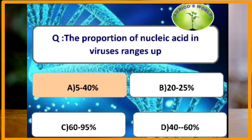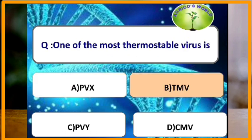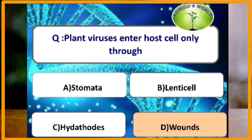The proportion of nucleic acid in viruses ranges from 5 to 40 percent. One of the most thermostable viruses is TMV — tobacco mosaic virus — which has single-stranded RNA as its genetic material.